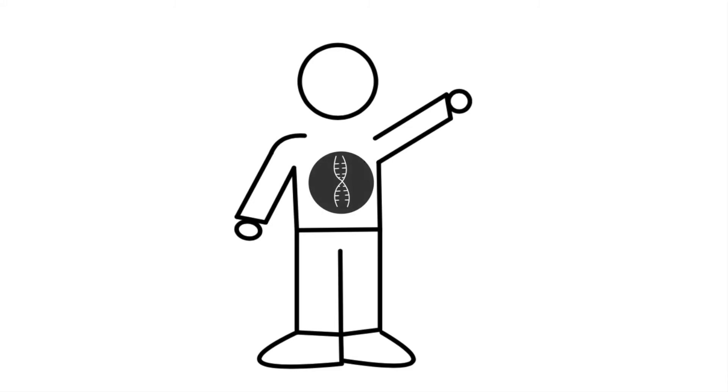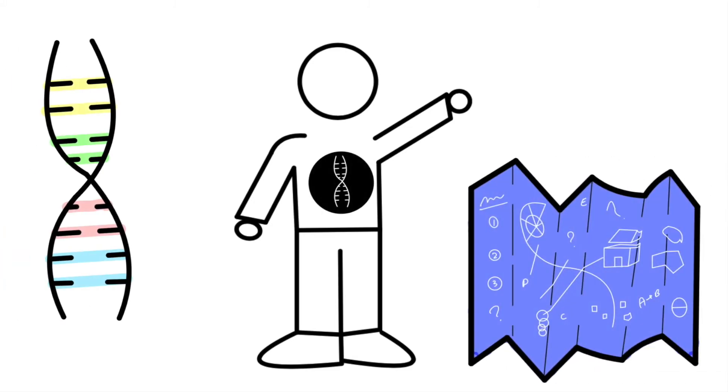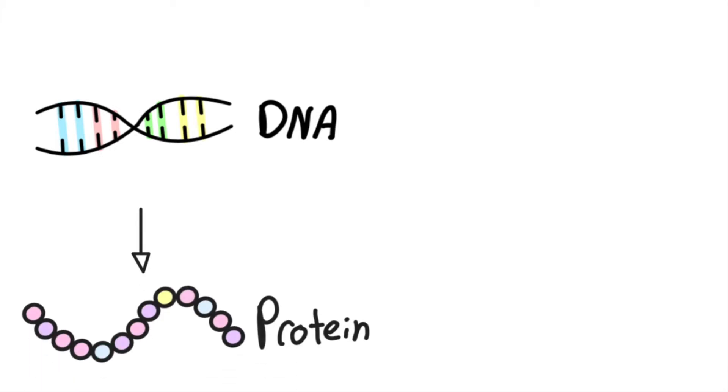We know that all living things have DNA, often thought of as a blueprint of life because it contains the instructions an organism needs to grow and reproduce. In order to survive, organisms turn DNA into protein.